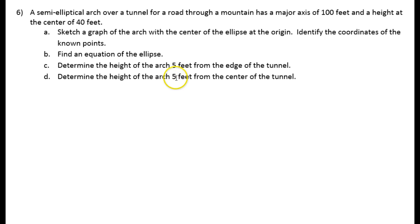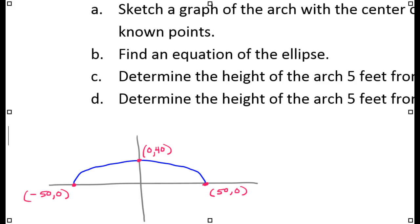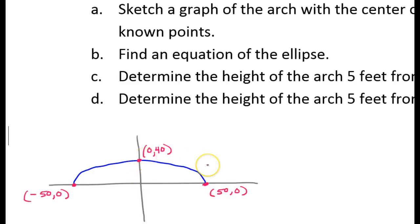As a real-world bonus problem: a semi-elliptical arch over a tunnel through a mountain has a major axis of 100 feet and a height at the center of 40 feet. With the center of the ellipse at the origin, the known points are (50, 0), (-50, 0), and (0, 40).